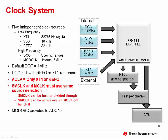ACLK can only be sourced from low frequency sources. SMCLK and MCLK can be sourced from any clock source. Note that SMCLK and MCLK are always sourced from the same clock, but SMCLK can be further divided down and it can stay on even when MCLK is off. The SMCLK frequency must always be the same or lower frequency than MCLK, and any dividers on MCLK will carry through to SMCLK, though SMCLK can then be additionally divided down on top of that.